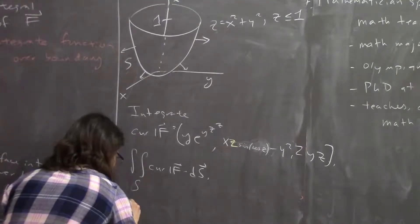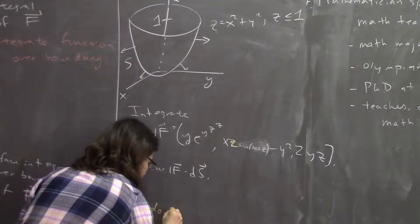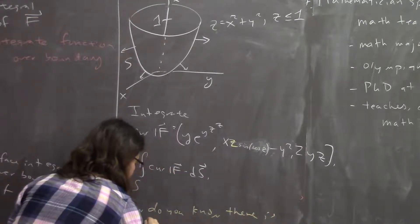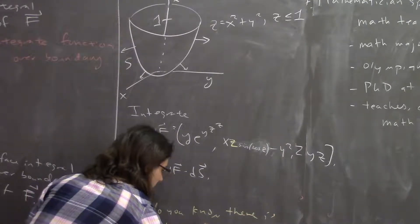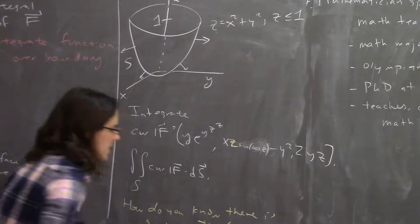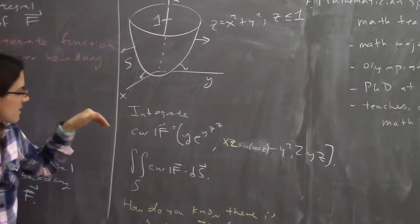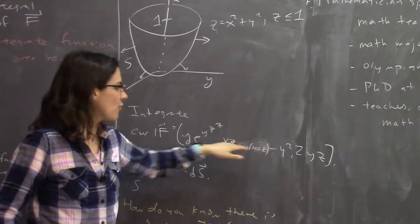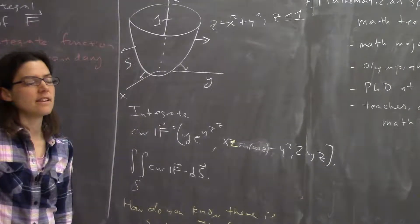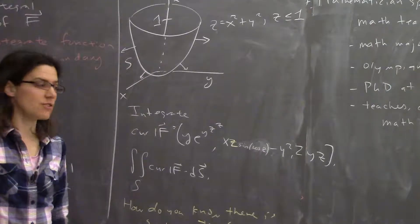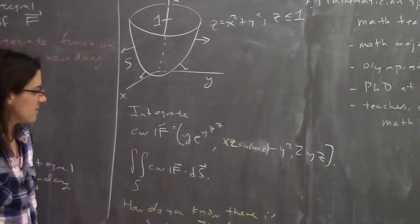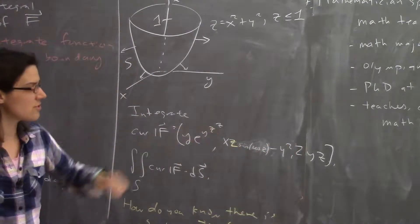Here's a question: how do you know there is such an F? We'll talk about it later. The answer is that a vector field is the curl of some other vector field if its divergence is zero. You can take the divergence of these things and find that it equals zero.